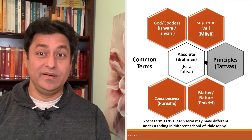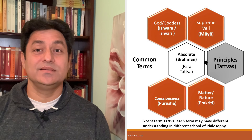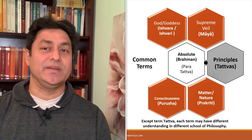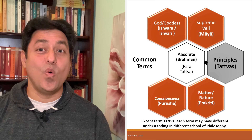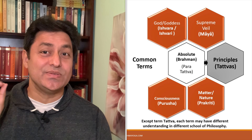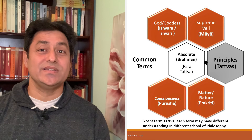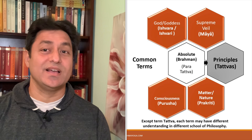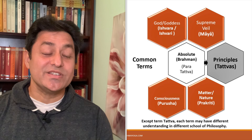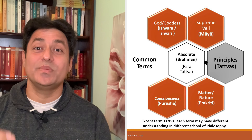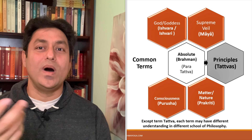Brahman, Ishwara, Maya, Purusha and Prakriti. I am picking only these five because they are major ones and will be reused in Tantra philosophy. You will also get to understand the term Tattwa. So let's go one by one.